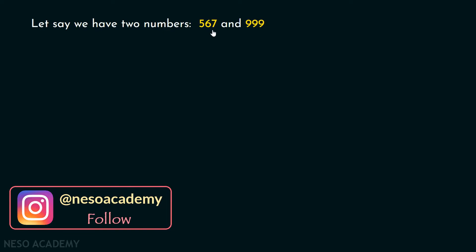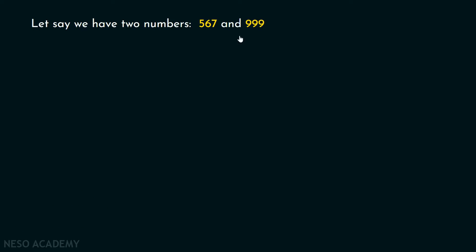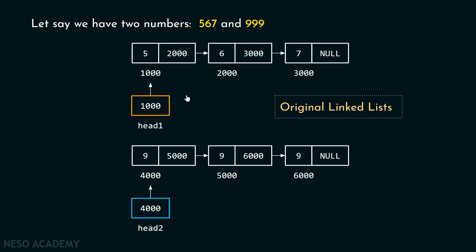Let's say we have two numbers 567 and 999. These are the original linked lists representing these two numbers. This linked list is representing 567 and this linked list is representing 999. Currently, head one pointer is pointing to the first node of this linked list and head two pointer is pointing to the first node of this linked list. After this, we need reversed linked lists — we have to reverse these linked lists.